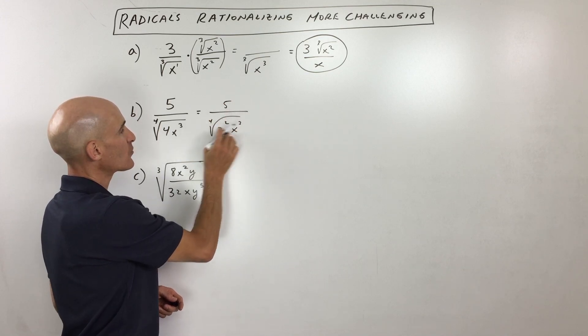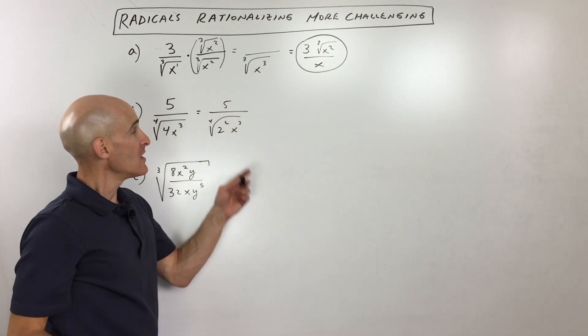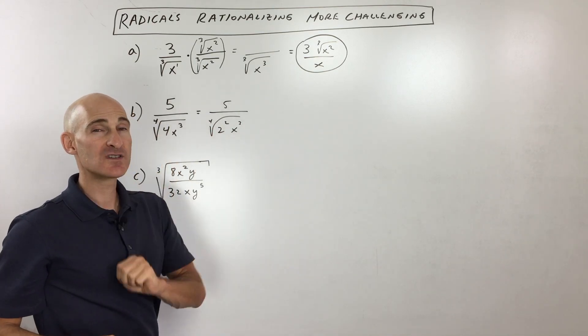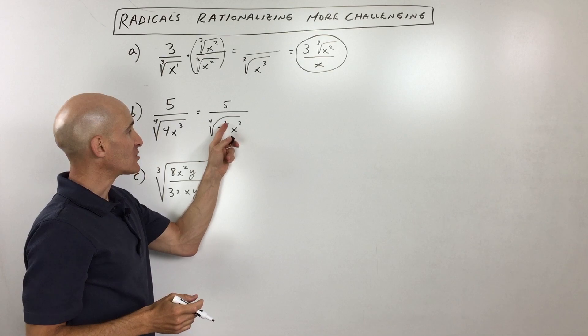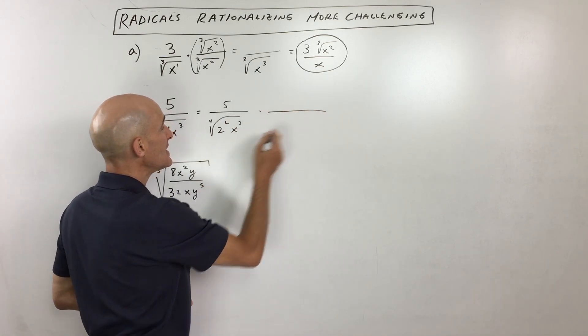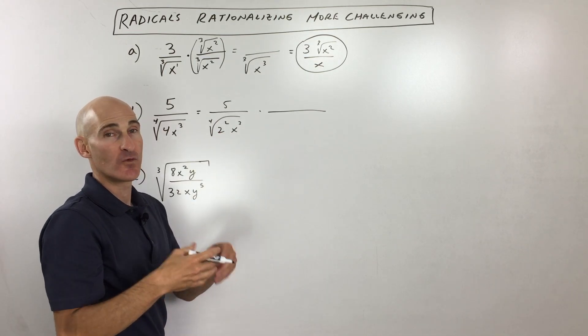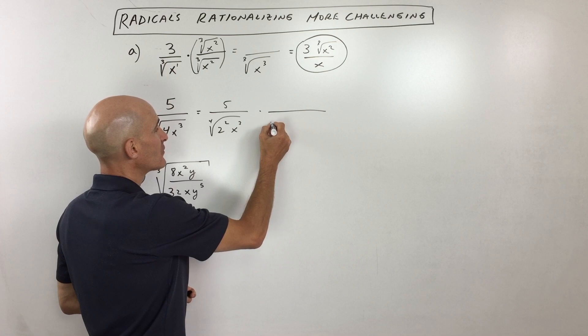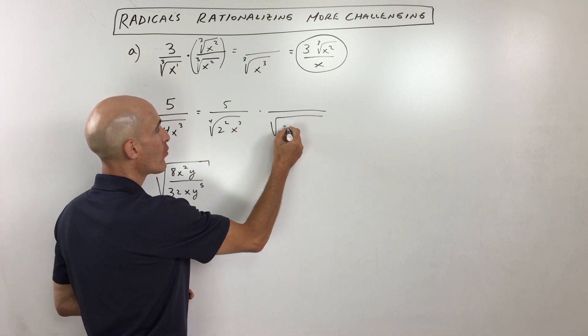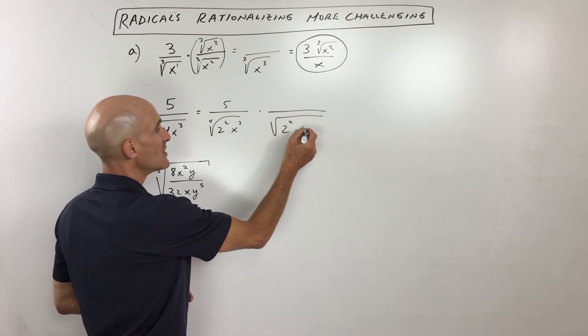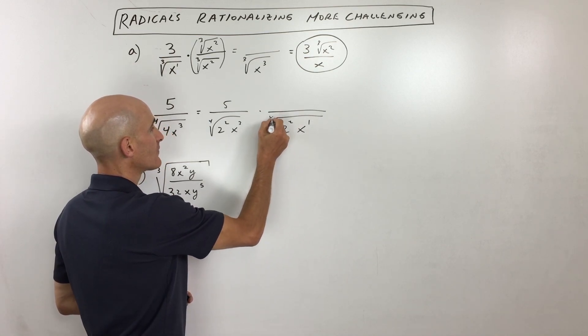And so now what we're trying to do is we're trying to get rid of this radical in the denominator. But remember, in order to take a fourth root of something, you're looking for groups of four of the same quantity, right? Here we've got two 2s, we've got three x's. How many more of these do we need to make it a perfect fourth power so that it works out to a nice fourth root? We have to look at what we're missing. We need actually two more 2s, so that'll give us four 2s, and we also need one more x.